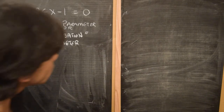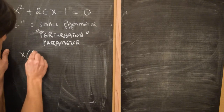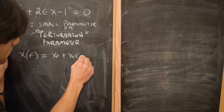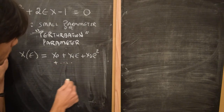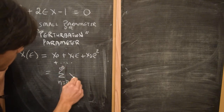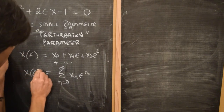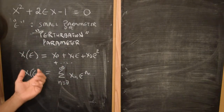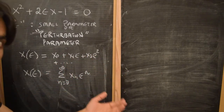So in other words, we're looking for a solution of this equation of the form x, which is a function of epsilon, which we can write as x₀ plus x₁ epsilon plus x₂ epsilon squared plus so on, or in general form, the sum from n equals 0 to infinity of xₙ epsilon to the power of n. So we'll assume that this particular equation has a solution of that form.